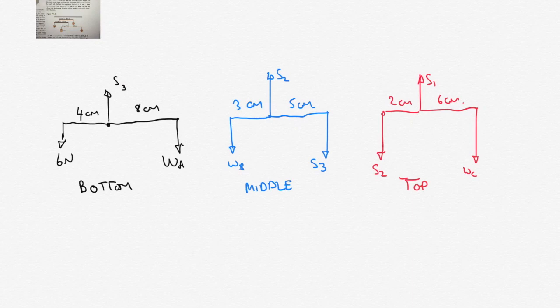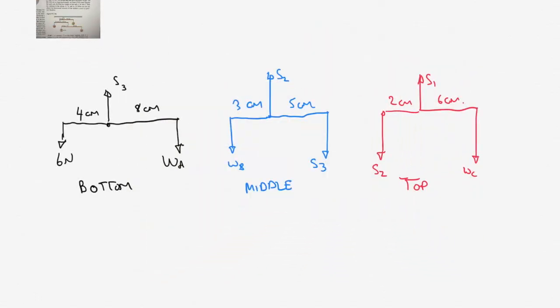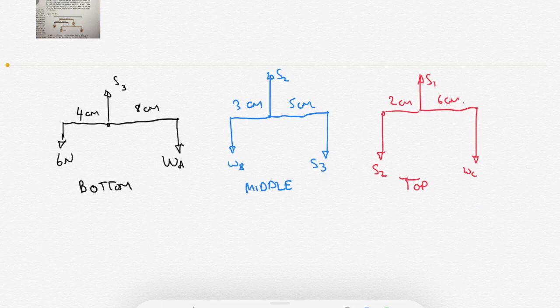Let's look at our free body diagrams. I drew these before we started. We've got our three rods: the bottom, the middle, and the top. Looking at the bottom rod, weight A is 8 centimeters to the right of the hanging point S3, and on the left of S3, at a distance of 4 centimeters, we have a weight of 6 newtons. So we've got our 6 newton weight 4 centimeters from the center, and weight A hanging 8 centimeters from the center.